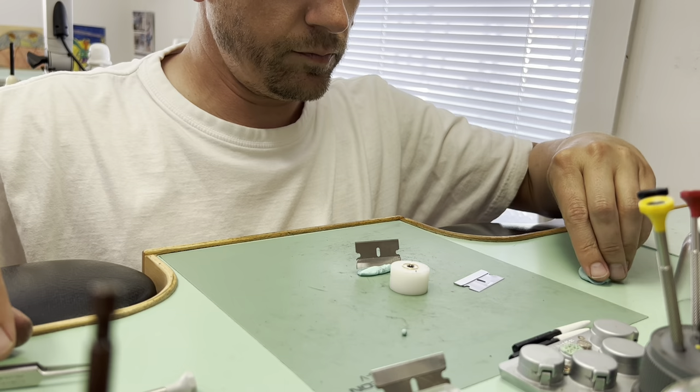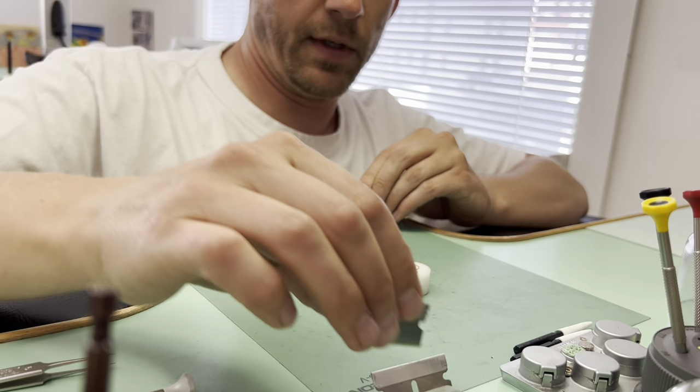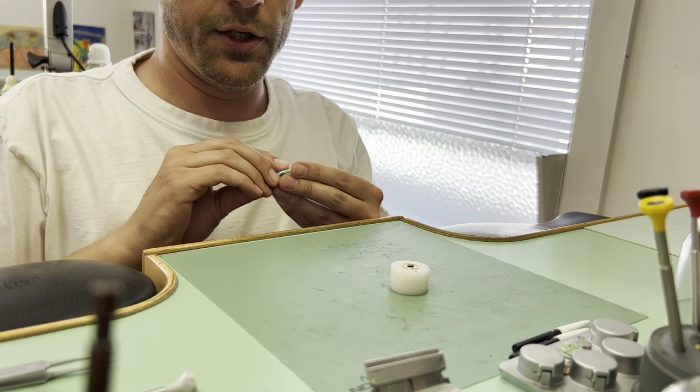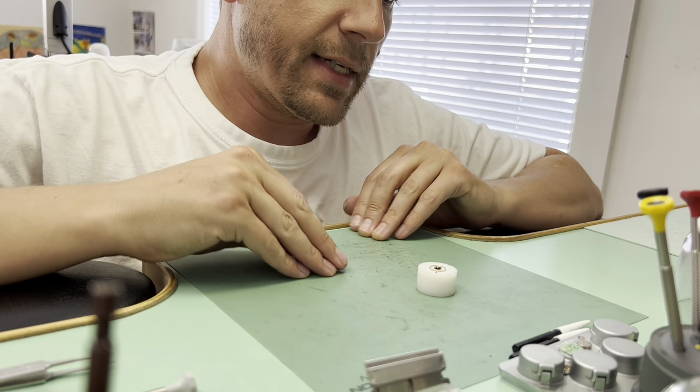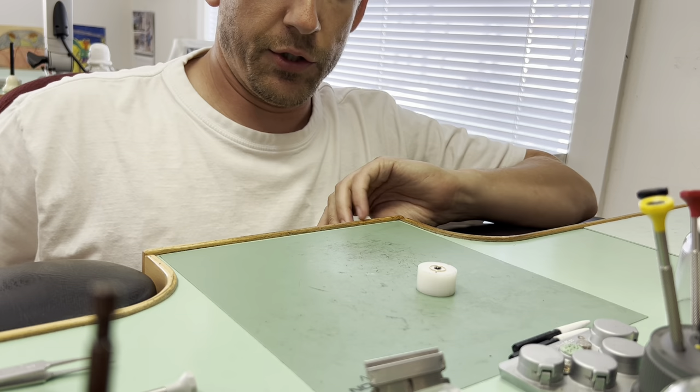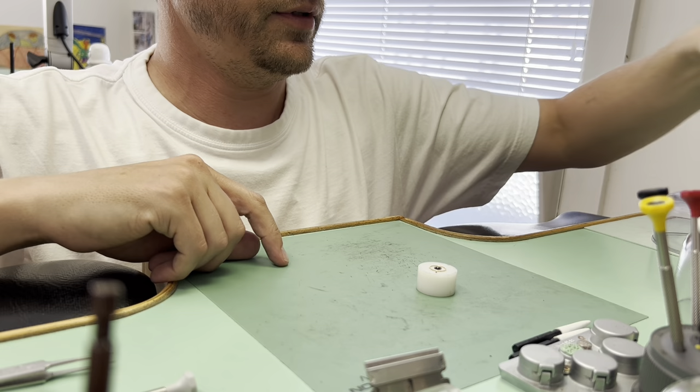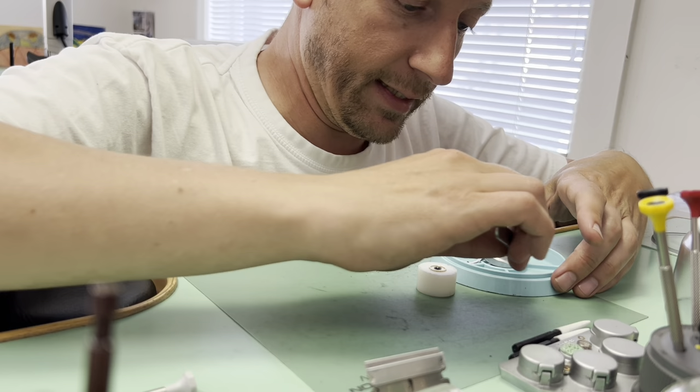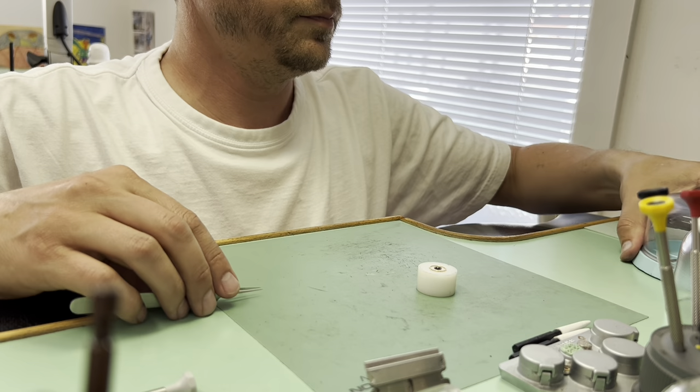The next step is to remove the staff, but when we remove the staff it actually removes the hairspring as well, all in one good swoop. I need to make sure I don't lose that roller table, so I'm going to set it aside.